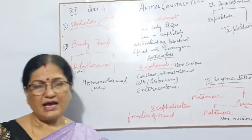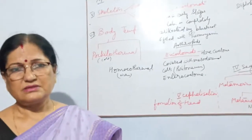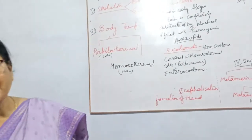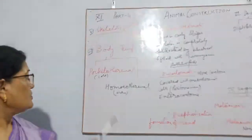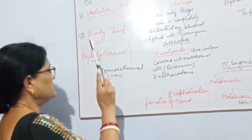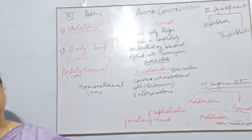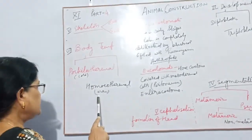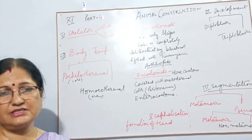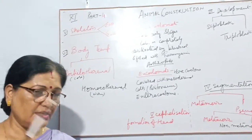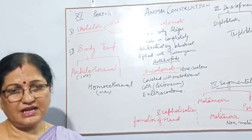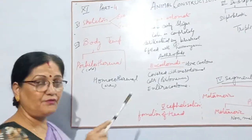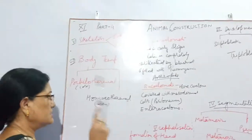Now we come to body temperature. As you already studied, animals are of two types — some are cold-blooded and some are warm-blooded. You should use the scientific terms: cold-blooded animals are called poikilothermal — those who change their temperature according to their habitat. Warm-blooded animals can maintain their body temperature regardless of whether the atmosphere has low or high temperature — these are known as homeothermal organisms.